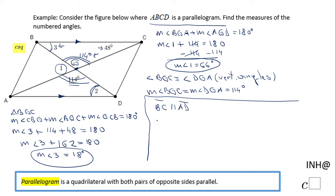That means the measure of angle DAC is equal to the measure of angle BDA because they are alternate interior angles.